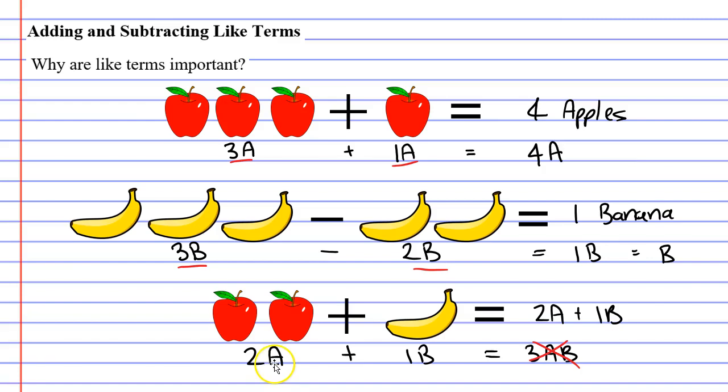But in the last case, the last scenario, we did not have like terms. And we can see that because one of our terms had an a, and the other one had a b. And we couldn't combine them together. We couldn't combine them and say we had 3ab, because they weren't like terms. And when we look at the picture, it makes sense. You can't combine 2 apples and a banana and say that I've got 3 apple bananas. It just can't happen.